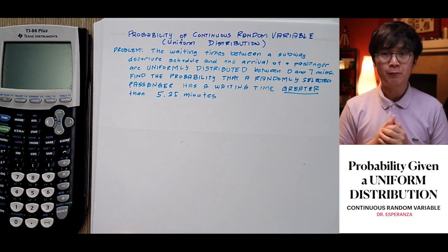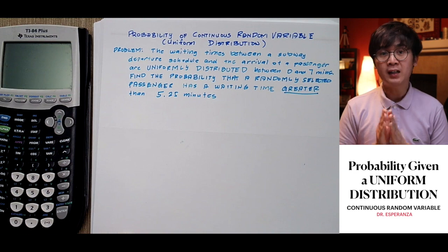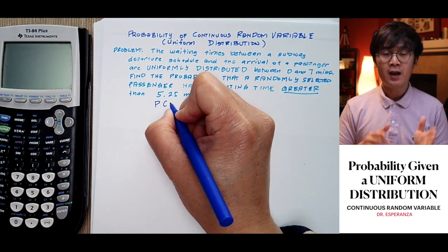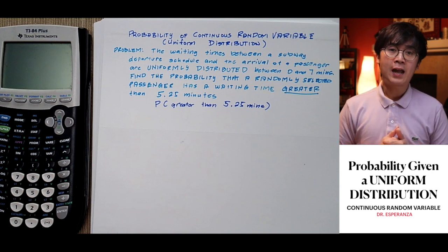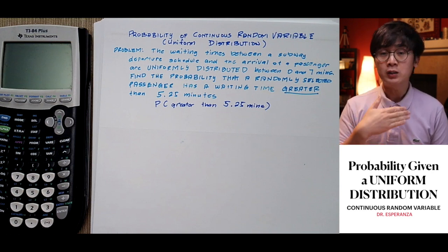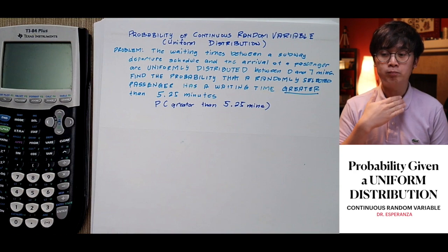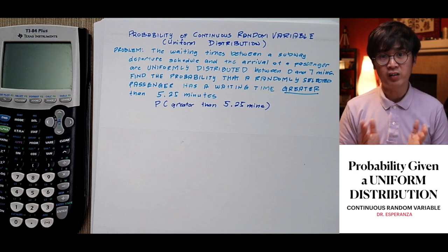In this case, we need to write our probability notation, which is P of greater than 5.25 minutes. That's what we're looking for. Just like when solving normal probability distribution, we need a visual.